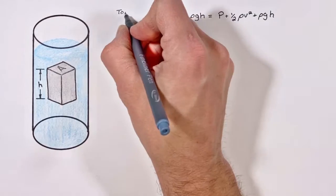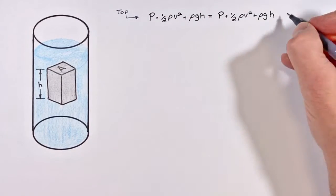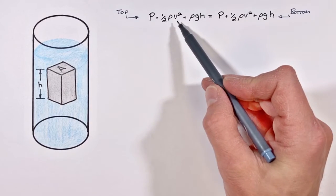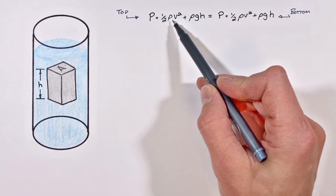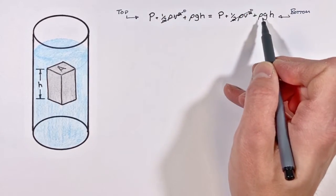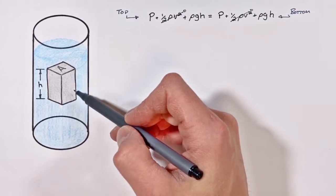Now this block's been immersed in this fluid, but nothing's moving, which means there's no velocity. So that means our dynamic pressure terms are going to be zero. Now our hydrostatic pressure terms are just based on height, and we can measure height relative to any point we want in this cylinder.